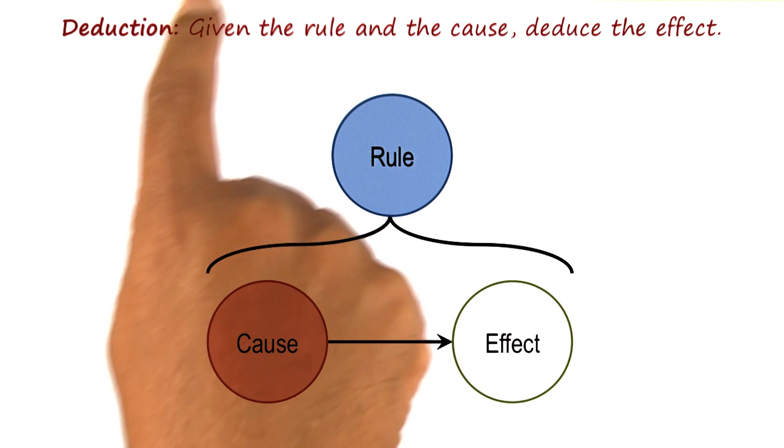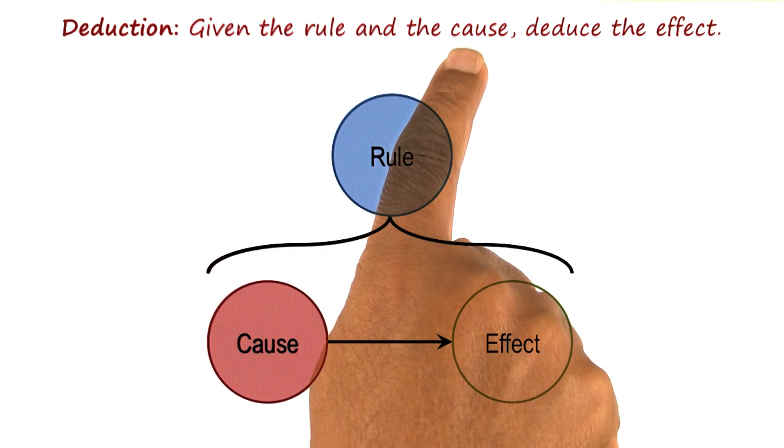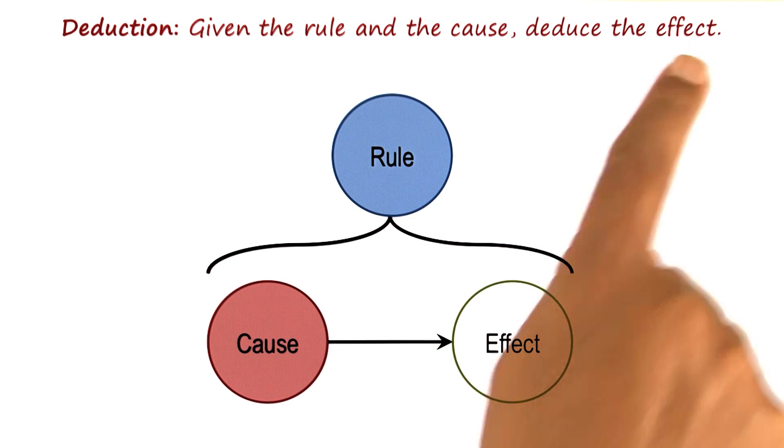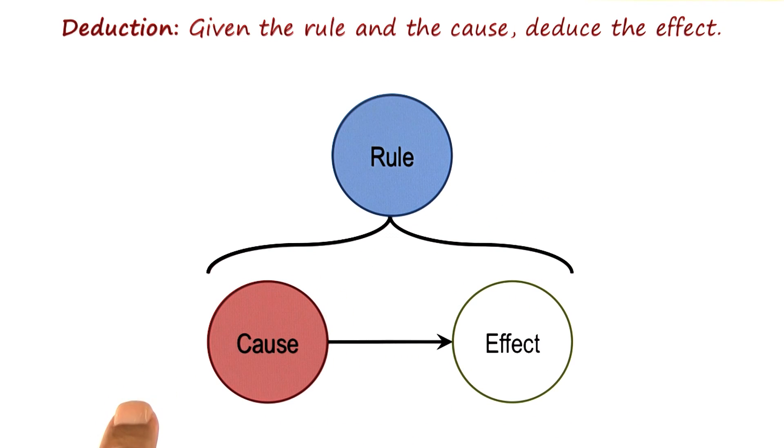Now in deduction, in one fundamental kind of inference, we know the rule and the cause, and we need to deduce the effect. So given the rule, if it is cloudy, then it rains, and given the cause, it is cloudy, we can deduce that it rains.